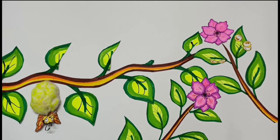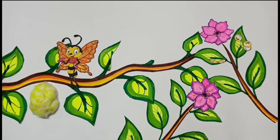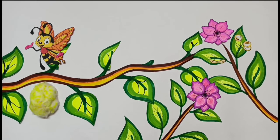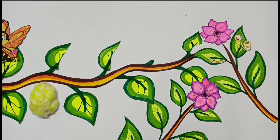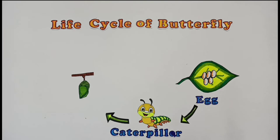After 15 days, a beautiful adult butterfly emerges. The series of changes in the life cycle of a butterfly is called metamorphosis.